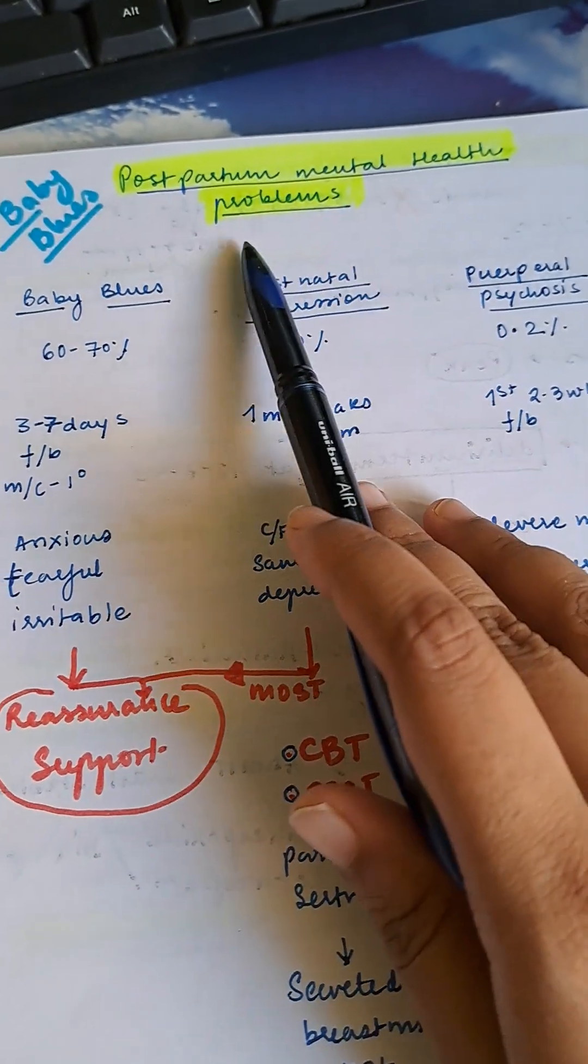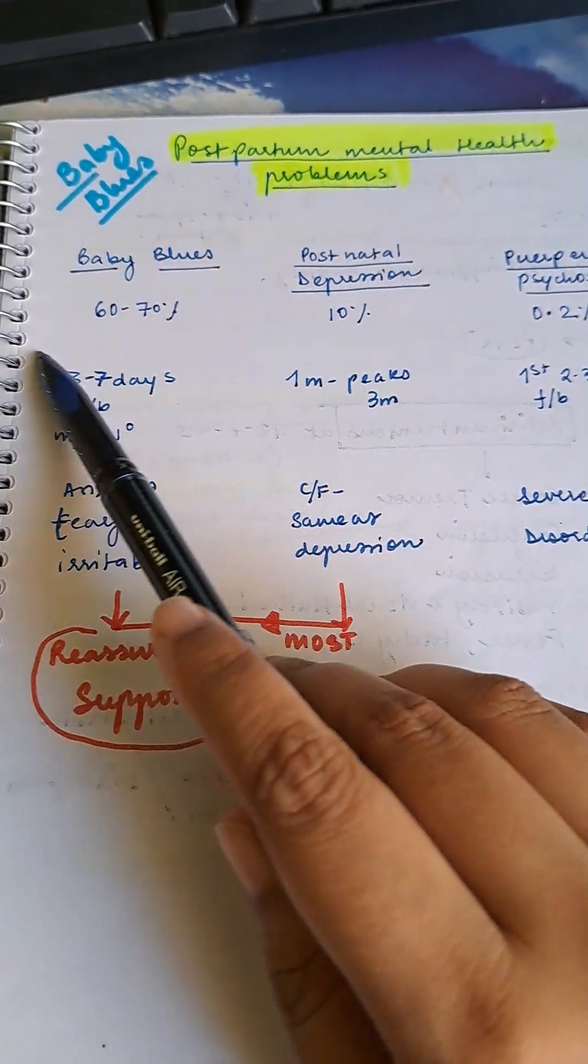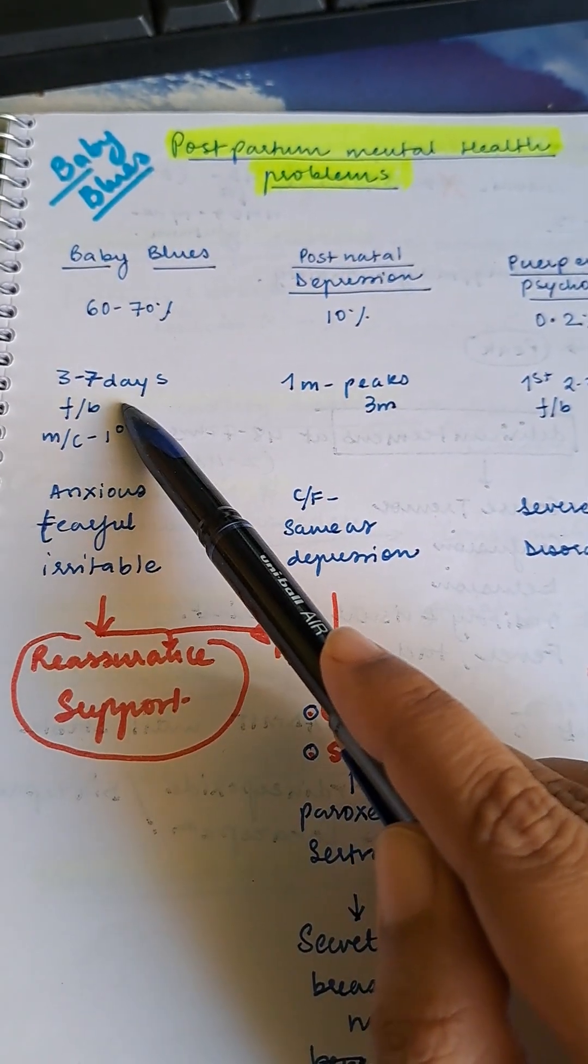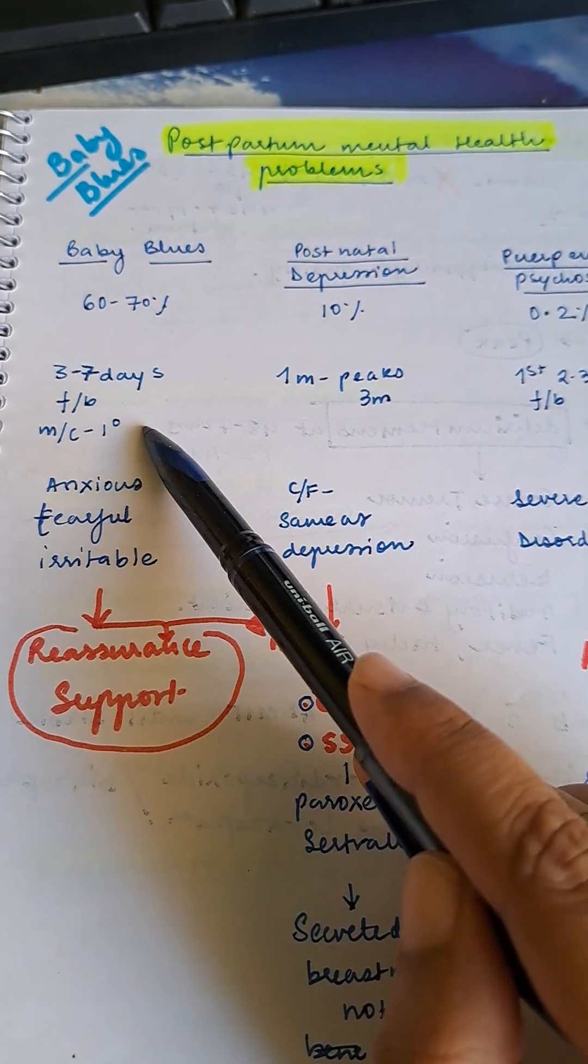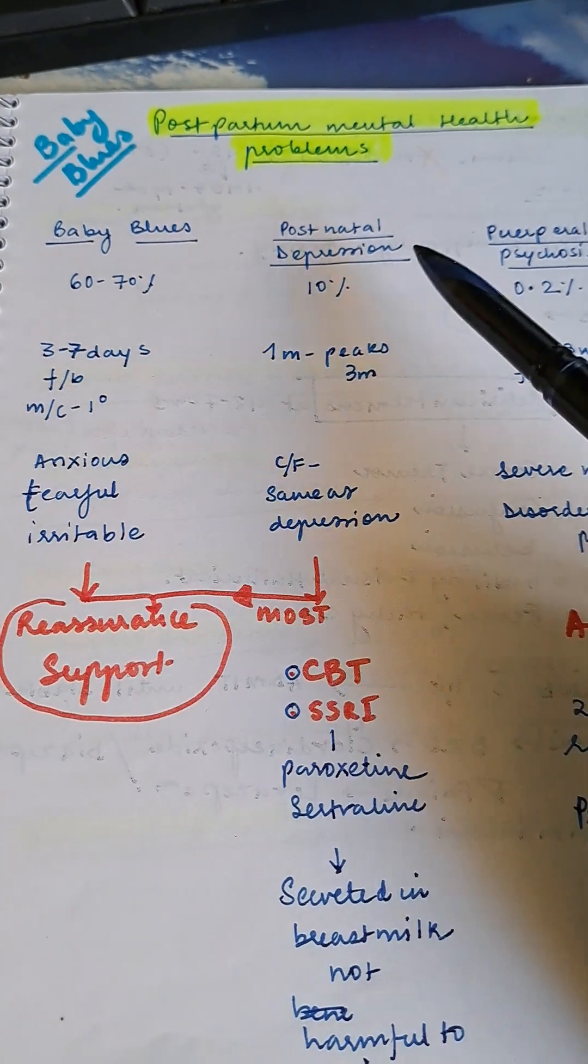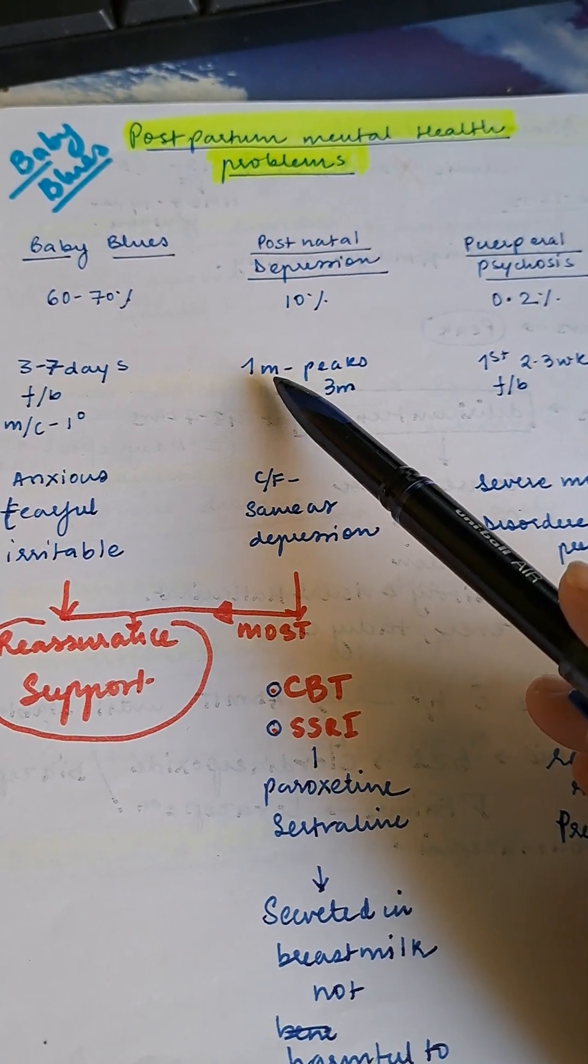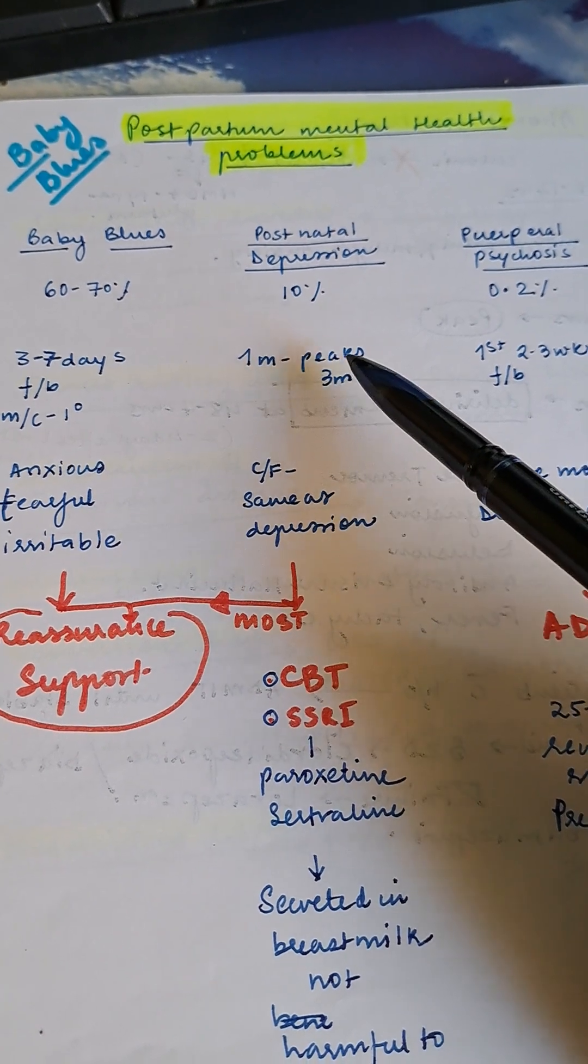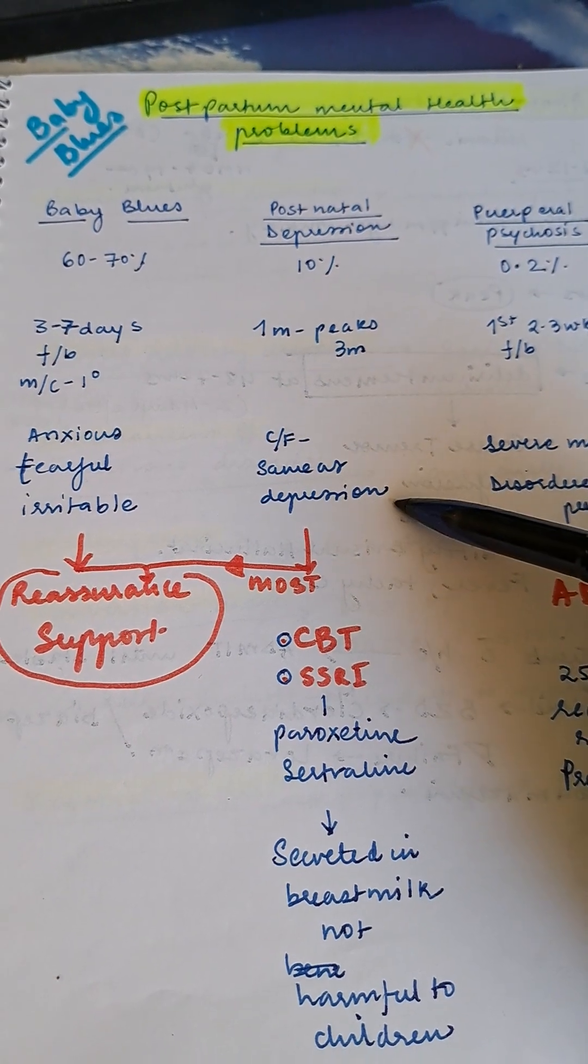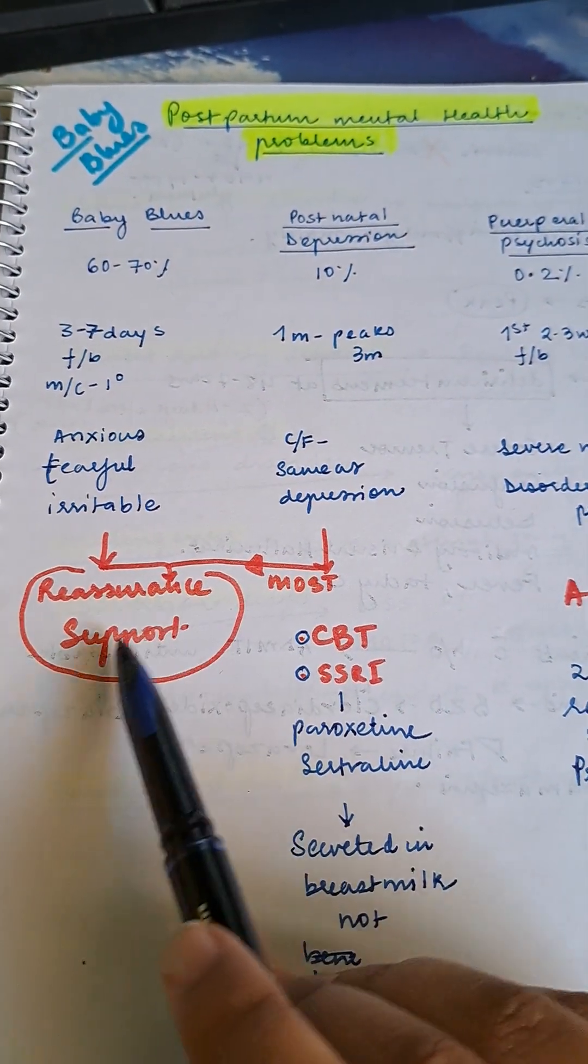Postpartum mental health problems. Baby blues present in 60 to 70%, three to seven days following birth. Most common. Mother is anxious, tearful, and irritable. Postnatal depression present in 10%, occurs after one month, peaks at three months. Clinical features same as depression. In both cases, only reassurance and support is necessary.